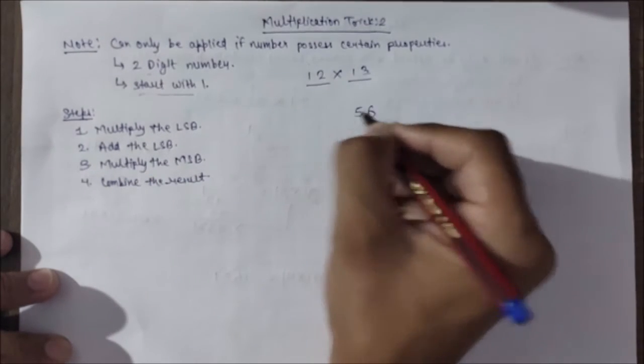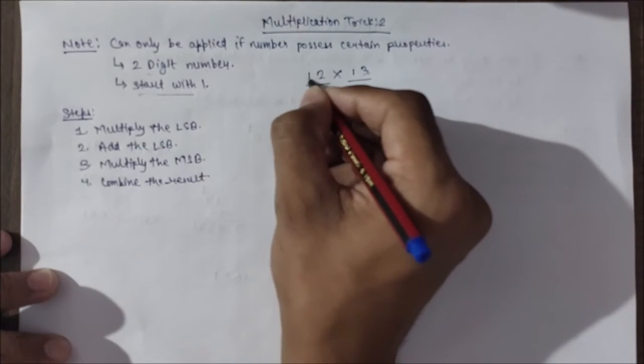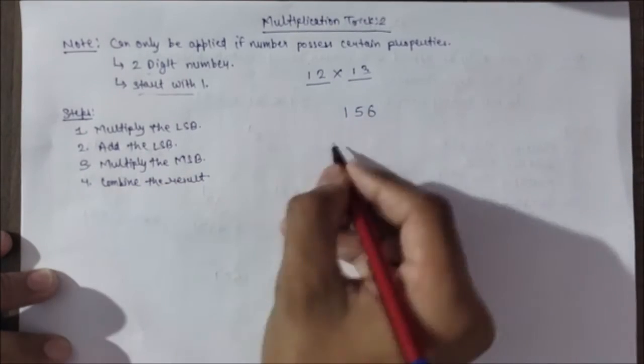Add the LSB. 2 plus 3 is 5. Multiply the MSB. 1 multiplied by 1 is 1. And combine the result.